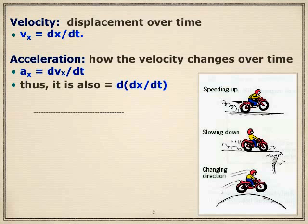Acceleration is how the velocity changes over time, or it's the derivative of velocity with respect to time, which makes it the double derivative of position with respect to time. Conceptually, velocity is speed with direction. Acceleration is about how the speed, the direction, or both change.